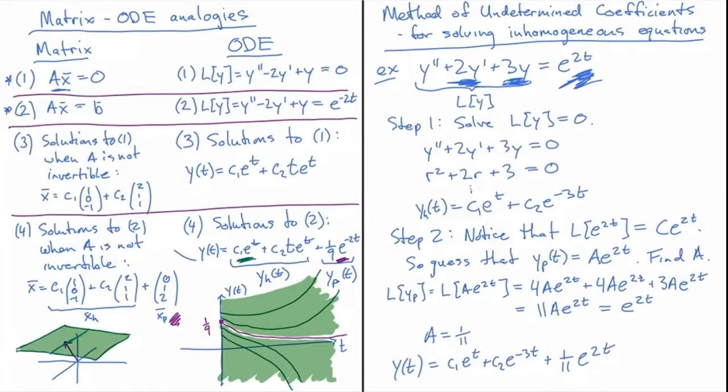Now why does that work? The reason this works is because—let's jump over to another page—we're dealing with the equation y'' + 2y' + 3y, which is our operator. And we found that L... So what I want to do is show that if I plug in L(yh), where yh is the homogeneous solution, that gives me 0.